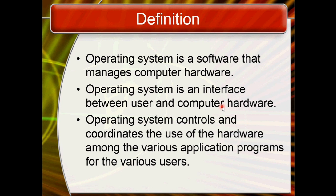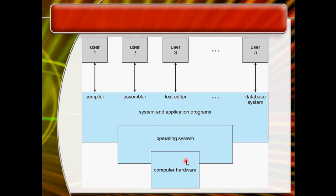When we use computers, we interact through the interface of the operating system. The third definition is shown in a diagram with three layers: the first layer is computer hardware, in the middle we have the operating system, and the third layer is system and application programs. Compilers, assemblers, and text editors are system programs. Database systems and word processors are application programs. Users interact at the system and application programs level, so the operating system is an interface between the user and computer hardware.